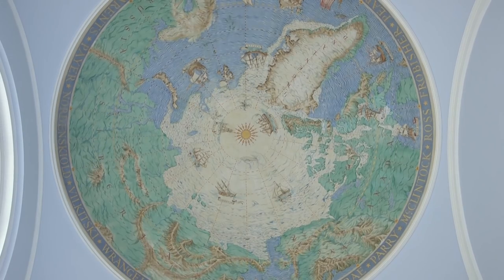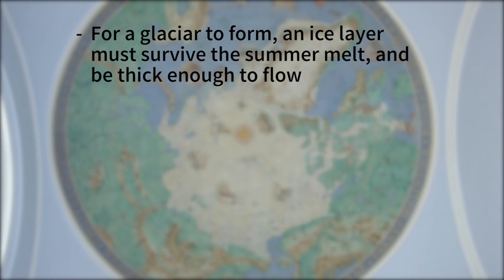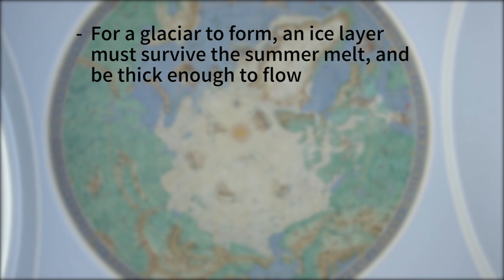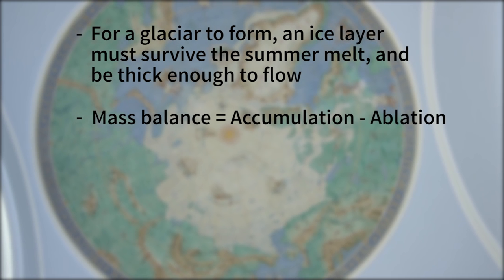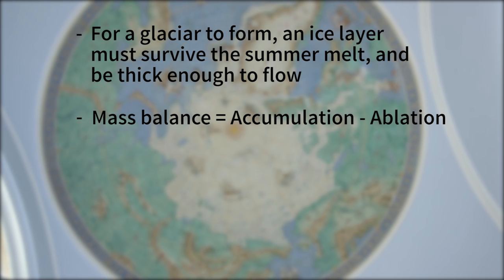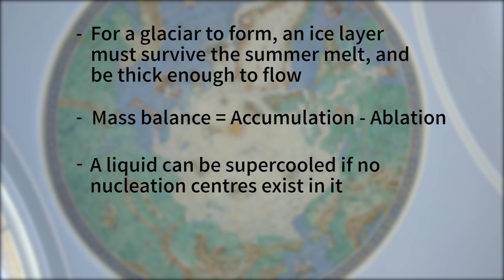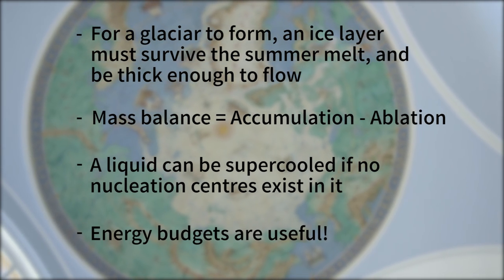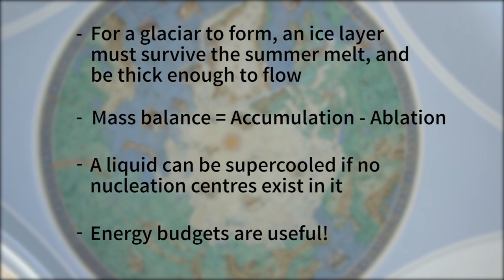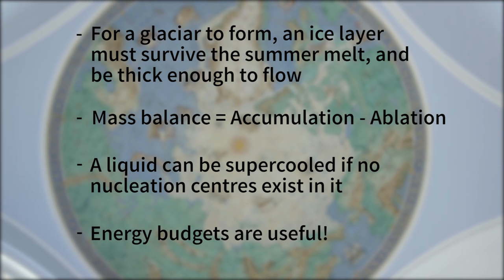Of course, not all melt takes place on the surface, and radiation can penetrate into the ice and cause internal melting. This creates planes of refrozen water as the ice melts in the sun and then freezes again at night along ice crystal boundaries. The key points in this episode are that in order for ice to become a glacier, it must exist in a layer thick enough to survive the summer melt season and thick enough for flow processes to occur. That the mass balance of a glacier is the accumulation, such as snowfall, minus the ablation, such as melt. That, with a lack of appropriate nucleation centers, a liquid can be supercooled below its freezing point without becoming a solid. And that a way to understand how much melting or ablation will take place at a given point in a glacier is to consider the energy budget at that point.